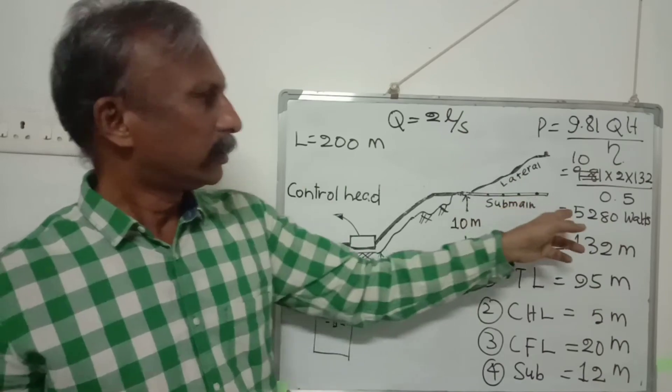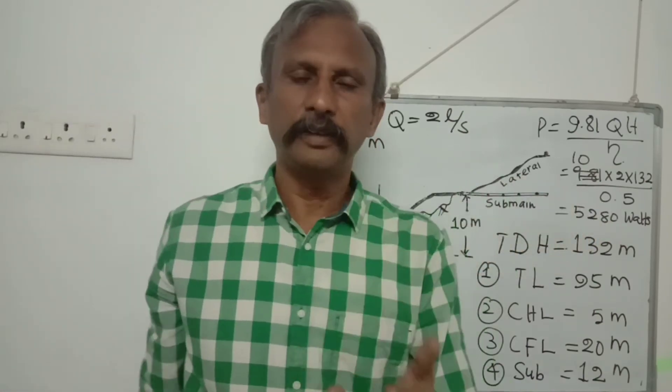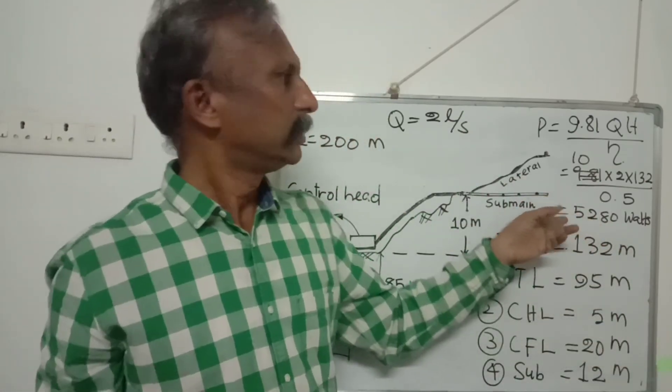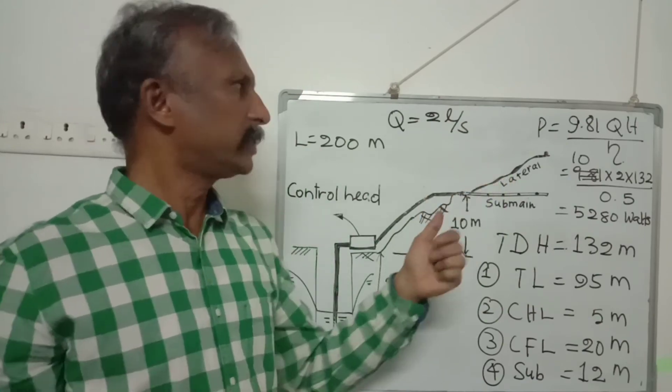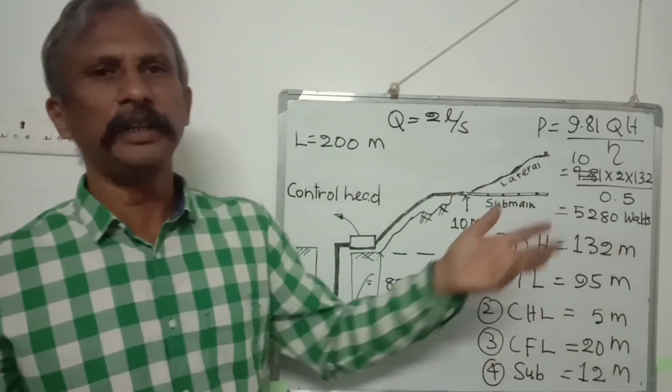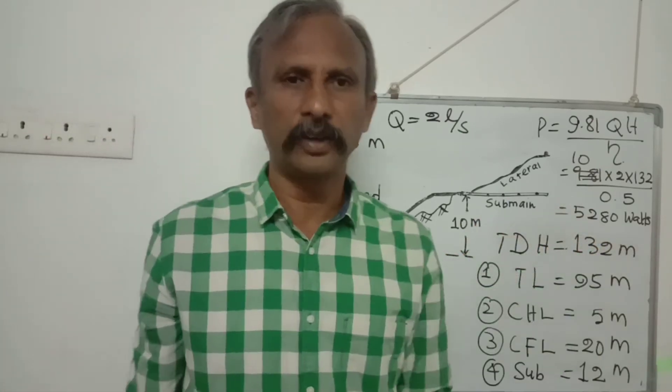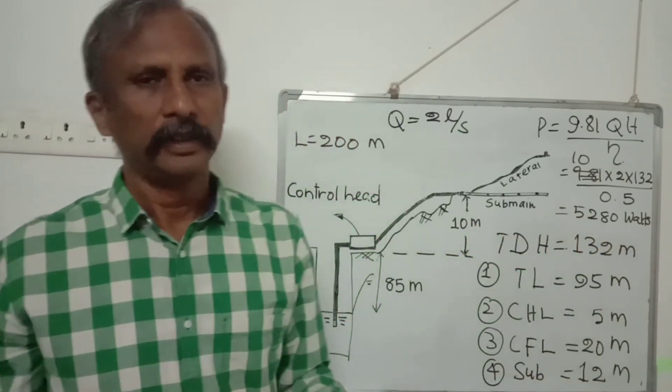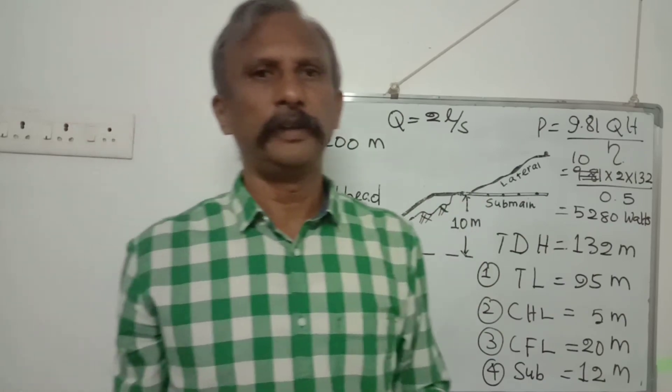So you don't need to look for exactly 5.2 kilowatts. When you purchase for 2 liters per second at 132 meters head, it will be near 5 kilowatts or 5.2 kilowatts, whatever may be the thing. Then your objective will be achieved.